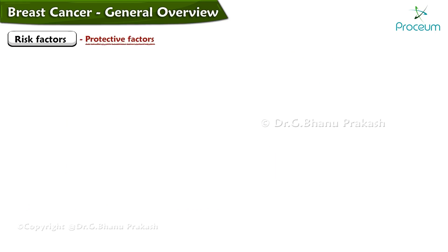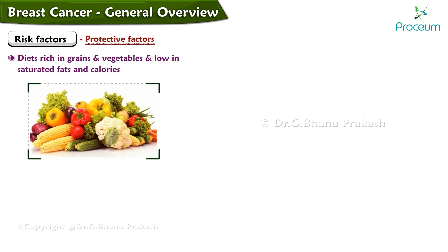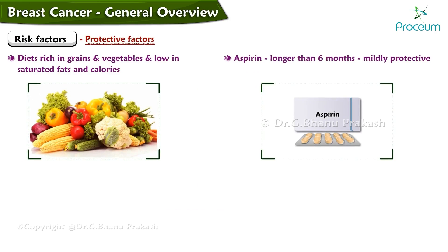Protective factors include diets rich in grains and vegetables and low in saturated fats and calories. Aspirin use for longer than six months is considered mildly protective.